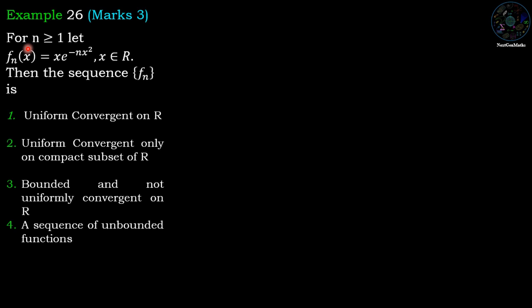For n greater than equal to 1, let f_n(x) = x · e^(-nx²), where x belongs to ℝ. Then the sequence f_n is: option 1 - uniform convergent on ℝ; option 2 - uniform convergent only on compact subsets of ℝ; option 3 - bounded and not uniform convergent on ℝ; and option 4 - a sequence of unbounded functions. So it is a problem of boundedness and uniform convergence of a sequence of functions.